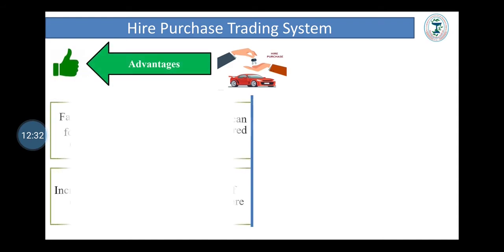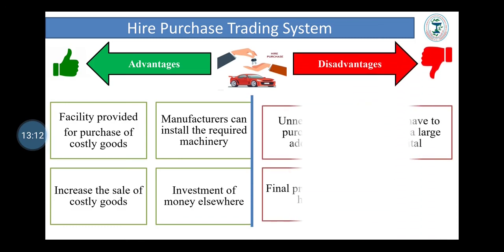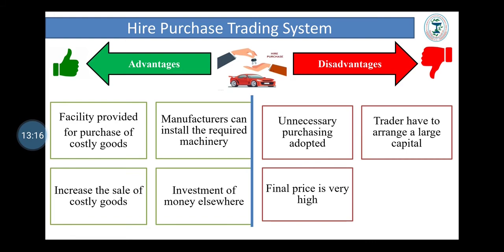Advantages of hire purchase trading system: Facility to purchase costly things such as houses, TVs, and cars. Small or medium scale manufacturers can install required machinery and tools without paying the total amount at once. It increases the sales of costly and luxurious things. People who have enough money may still prefer this system to invest their money elsewhere to earn profit. Disadvantages: Unnecessary purchasing is encouraged. Traders need to arrange large capital to finance their business. The final price of goods is normally higher than normal due to installment payments.